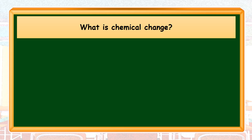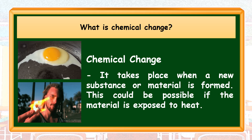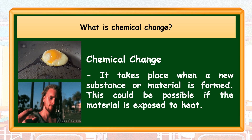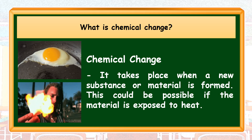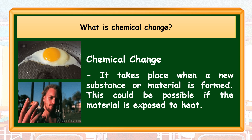The three illustrations tell us about chemical change that could happen if there is an application of heat. Chemical change takes place when a new substance or material is formed. This could be possible if the material is exposed to heat. Always remember that chemical change forms a new product due to the chemical reaction that takes place when heat is applied in a material. This type of change is irreversible.